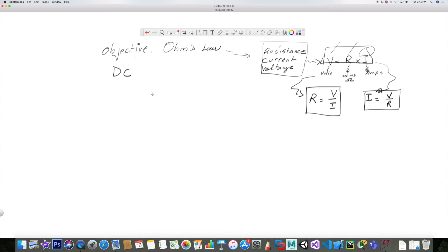What you have is a resistor, and this is the symbol for a resistor right here. Current goes through it, and what happens when current goes through it is you end up with a voltage against the resistance.